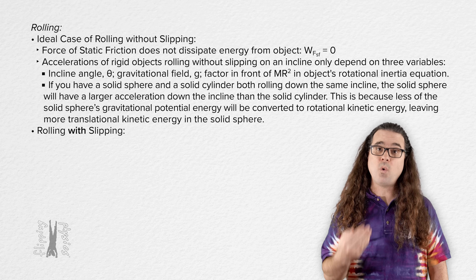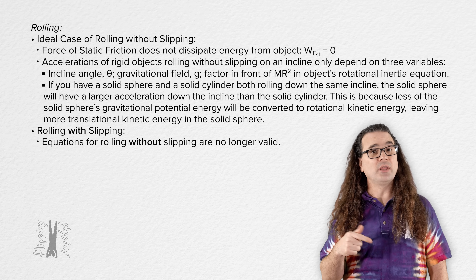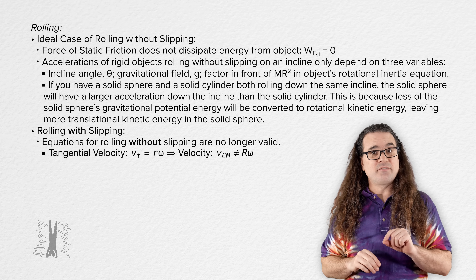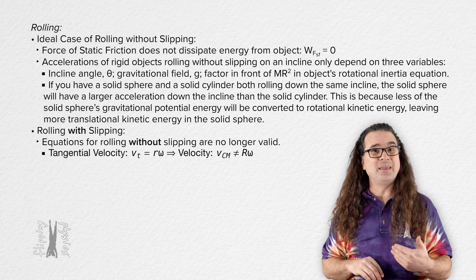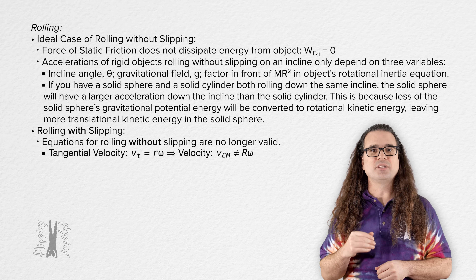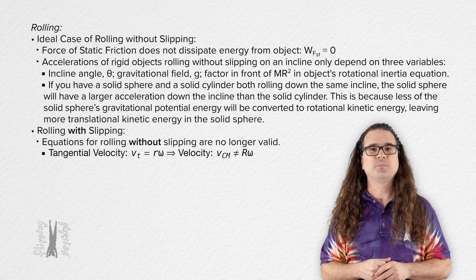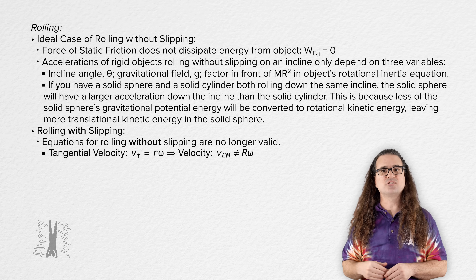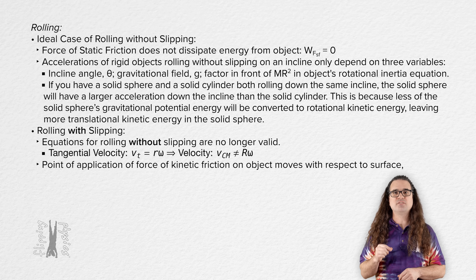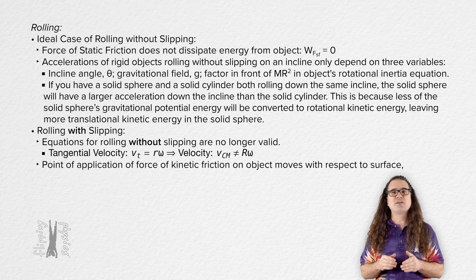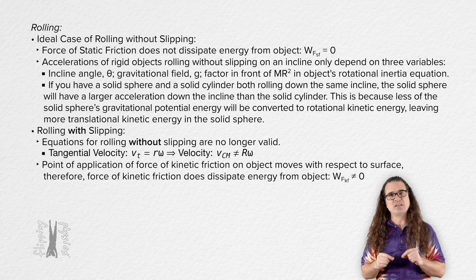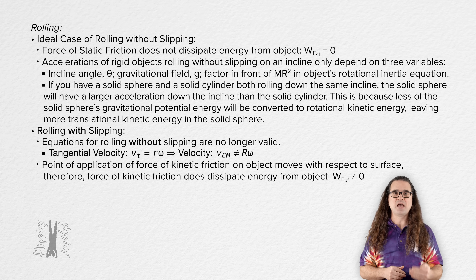When an object is rolling with slipping, the equations for rolling without slipping are no longer valid. For example, the velocity of the center of mass does not equal the radius of the object times its angular velocity. When rolling with slipping on a surface, the point of application of the force of kinetic friction moves with respect to the surface. Therefore, the force of kinetic friction does dissipate energy from the object — kinetic friction does work on the object.